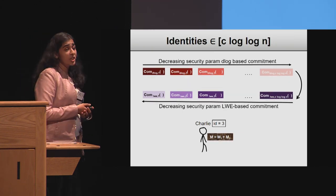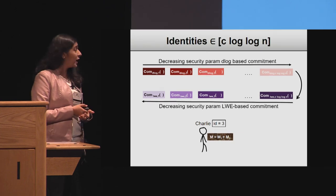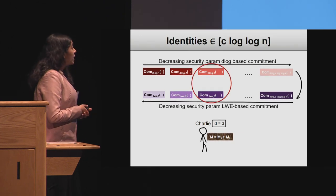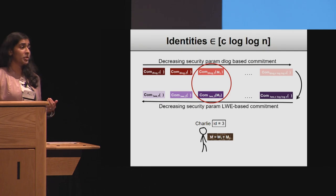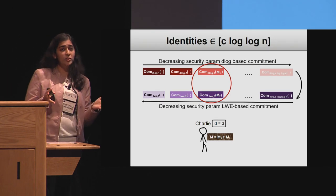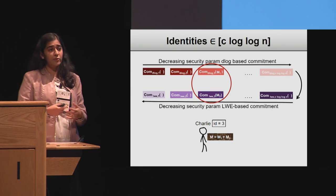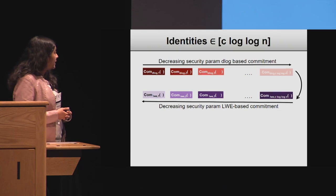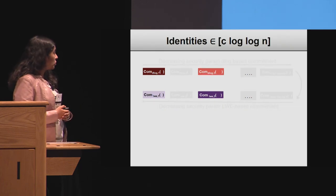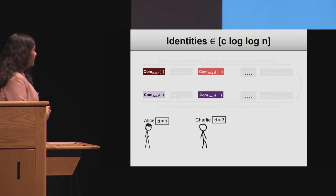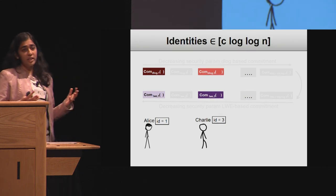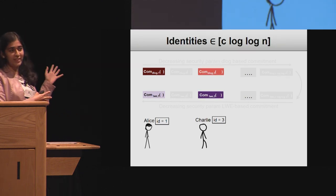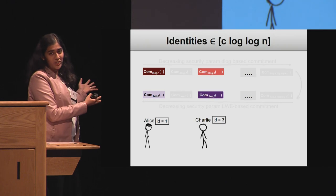That constitutes a commitment for identity three. Why is this non-malleable? Let's say we have Alice and Charlie, with identities one and three respectively. We want to argue that they're both non-malleable with respect to each other. Let's say Charlie is the bad guy — we want to argue that the message committed by Charlie is independent of the message committed by Alice.